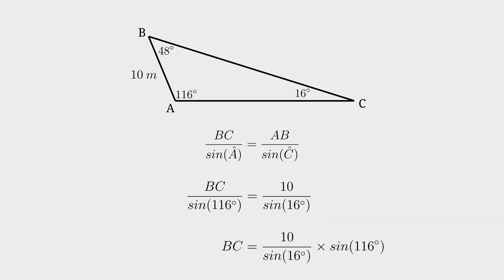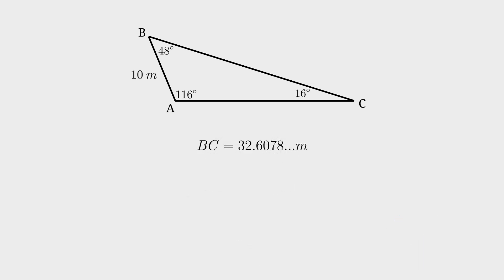If you type 10 over sine of 16 degrees multiplied by sine of 116 degrees into your calculator, you'll get 32.6078 meters. If you were to round it off to two decimals, you have 32.61 meters. To work out the last length of this triangle,